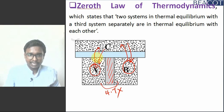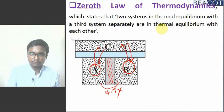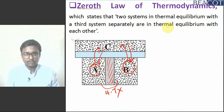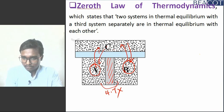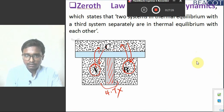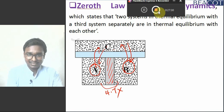After some time, if A is equalized to C's temperature and B is equalized to C's temperature, then A's temperature and B's temperature will equalize with each other — that is called the zeroth law of thermodynamics. That's it for today's lecture. Thank you.